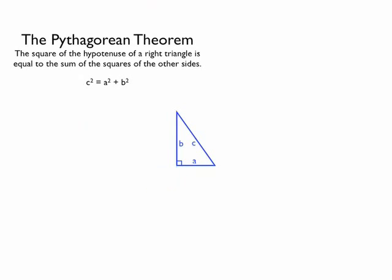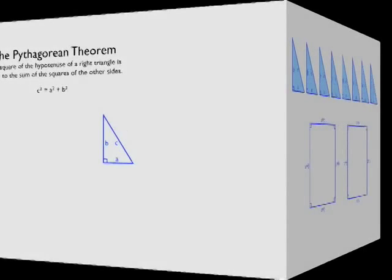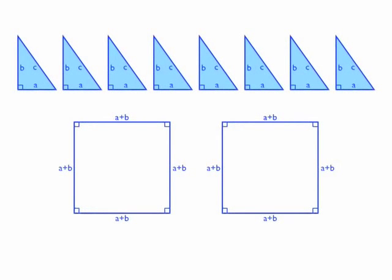Let's duplicate this triangle eight times. Below the triangles, we have two squares that are the exact same size. Each side of the squares has length a plus b.